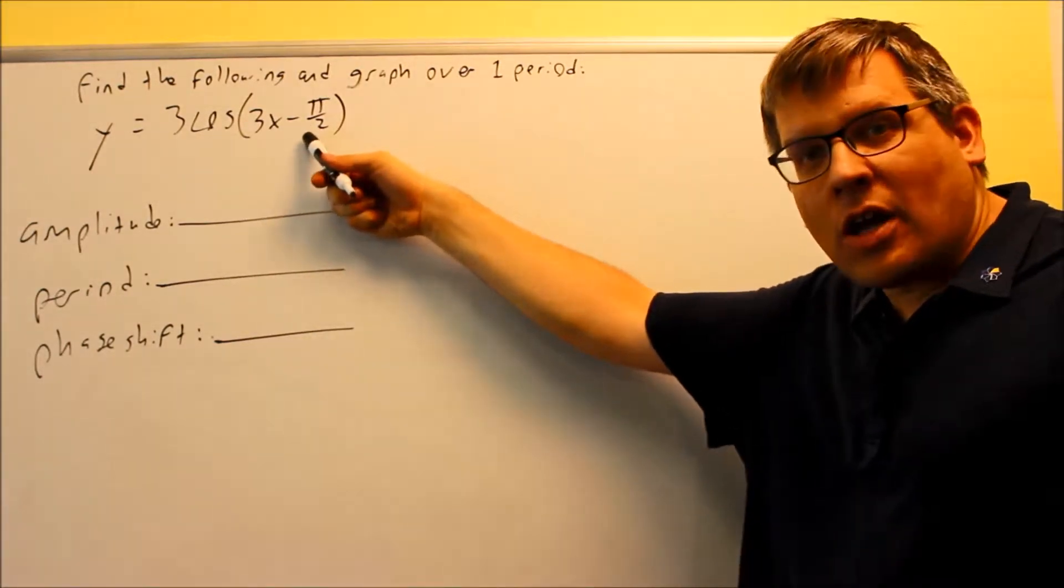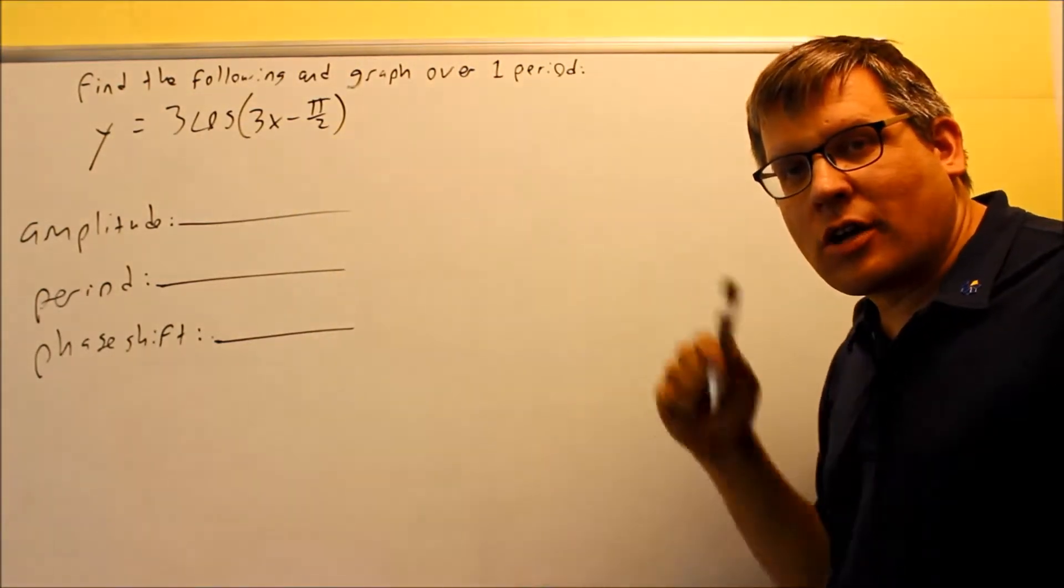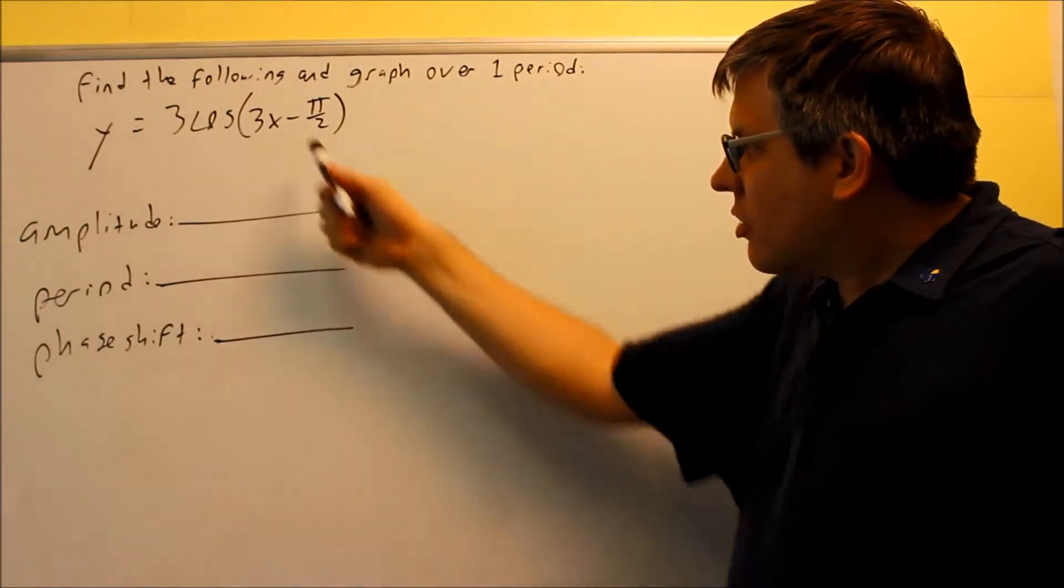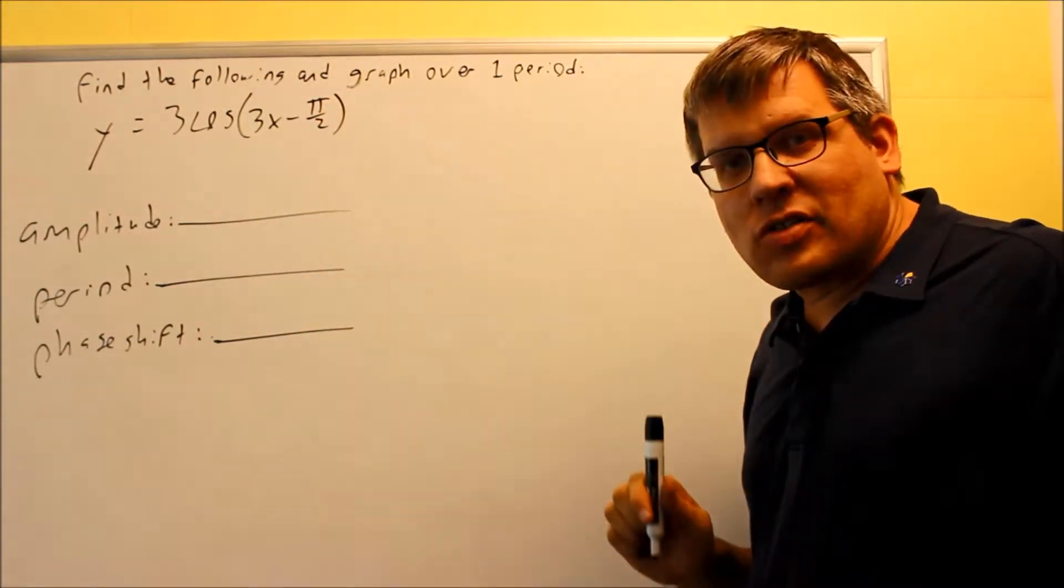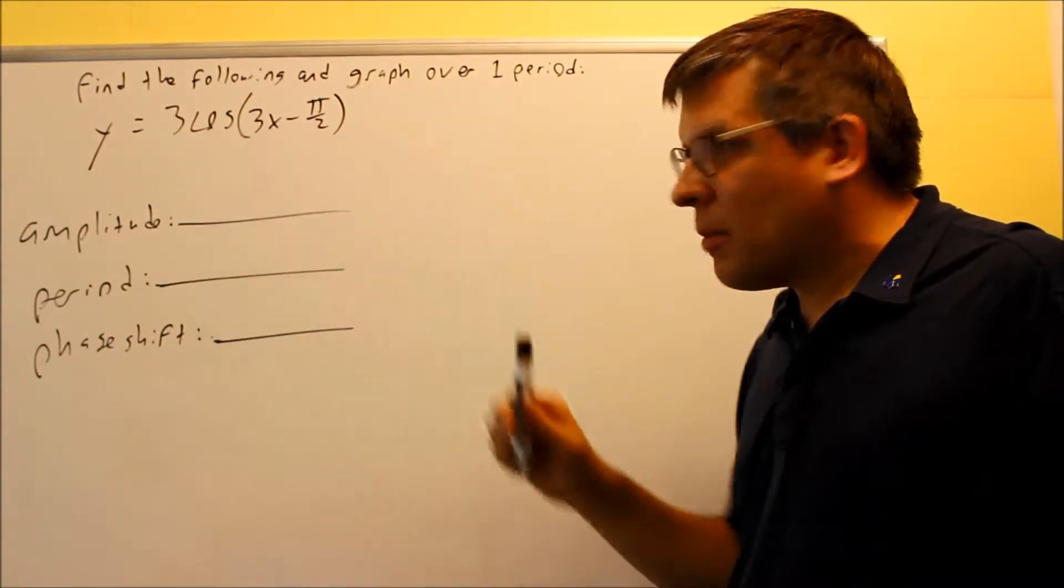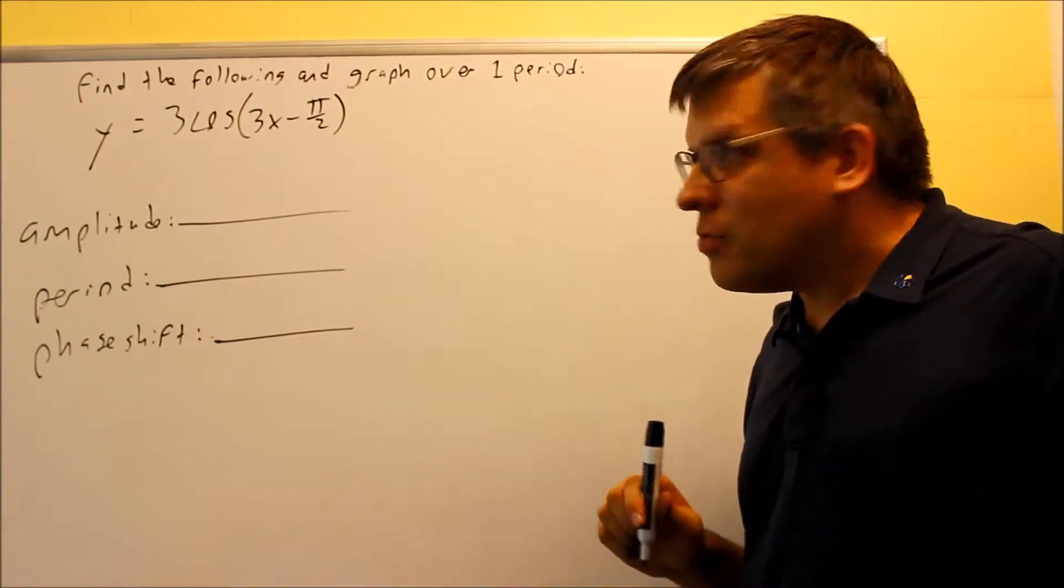If you see a number that comes after the x, then you know that the phase shift is not going to be zero. Also, I can tell there's a number in front of the x that's not a one, so that tells me that my period is not just going to be 2π.